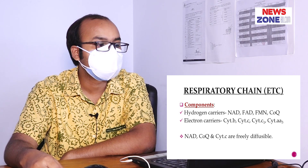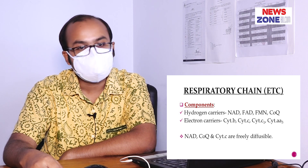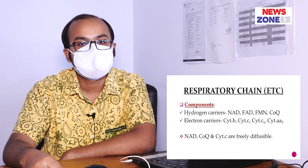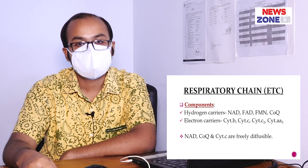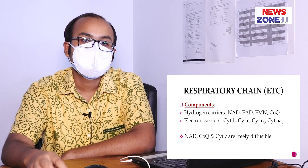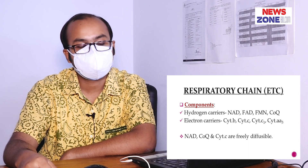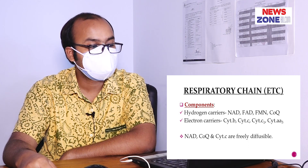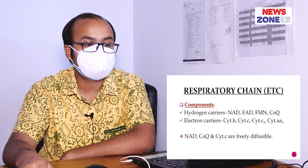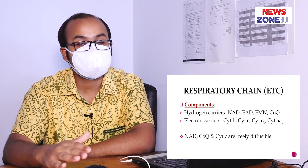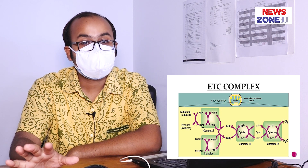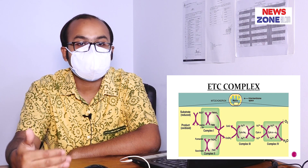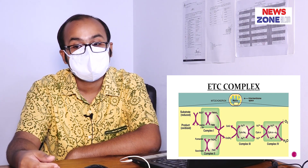The hydrogen carriers are: NAD (nicotinamide adenine dinucleotide), FAD (flavin adenine dinucleotide), FMN (flavin mononucleotide), and coenzyme Q. The electron transporters are: cytochrome b, cytochrome c, cytochrome c1, and cytochrome AA3. Of these, three molecules are freely diffusible — NADH, cytochrome c, and coenzyme Q — so they don't need any carrier. There are principally four complexes in the electron transport chain, though some authors list five.